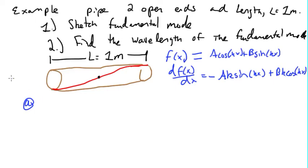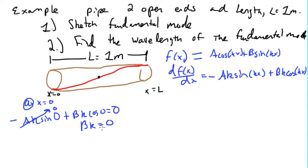Let's look at this. We'll say this is x equal to zero and this is x equal to L. So at x equal to zero, we have minus Ak sine of zero plus Bk cosine of zero equal to zero. Sine of zero is zero, so this whole term is zero. Cosine of zero is one, so we get Bk equal to zero. We know this is going to have a wavelength, so we can say that B has to be equal to zero.